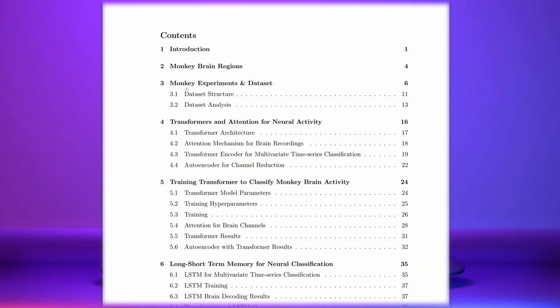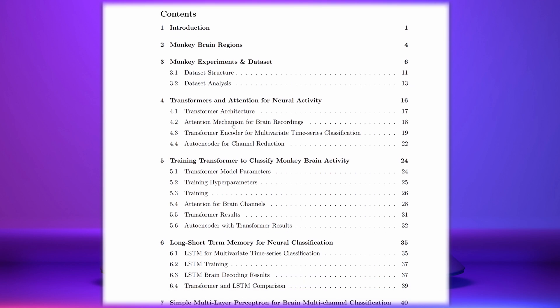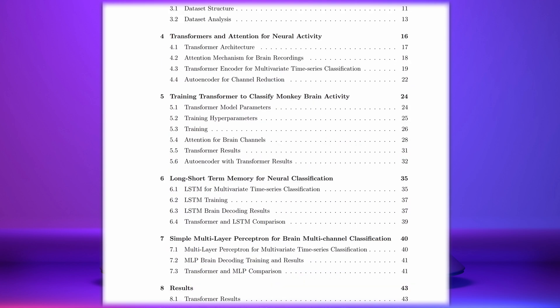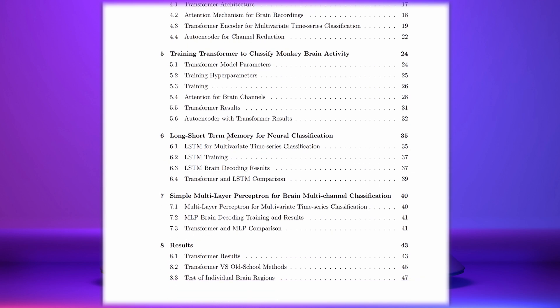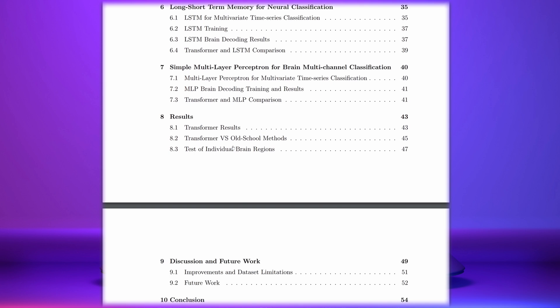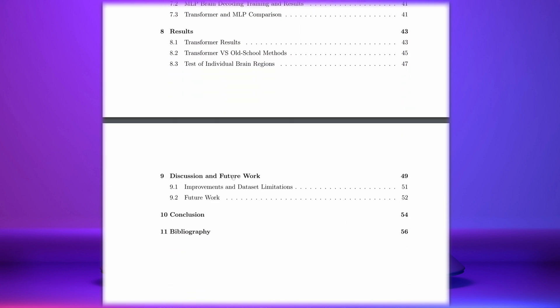The most important thing I do when setting up my projects and my master's thesis is to write out the overall headlines first. I start with the monkey experiments dataset and monkey brain recordings, then transformers and attention for neural activity, training transformers to classify monkey brain activity, an LSTM model for neural classification, and some comparison models at the end. Then we have results, discussion and future work, conclusion, and references at the end. This is a fairly straightforward structure for your report.